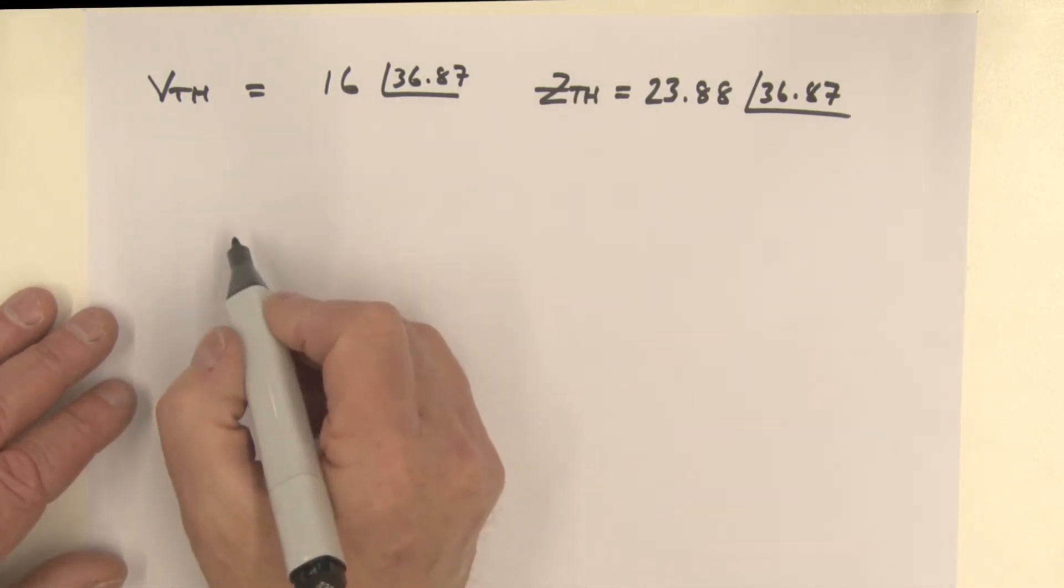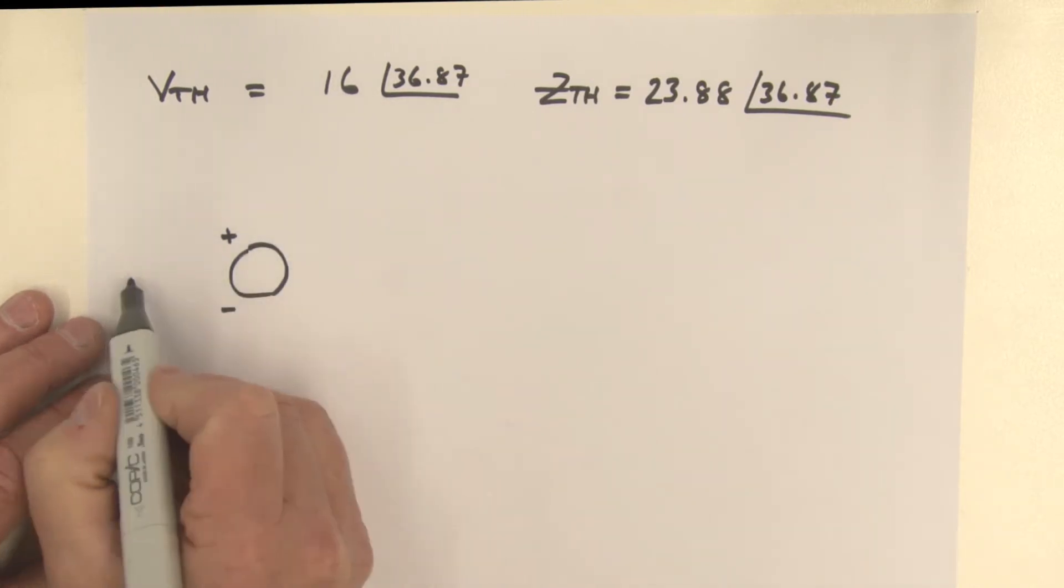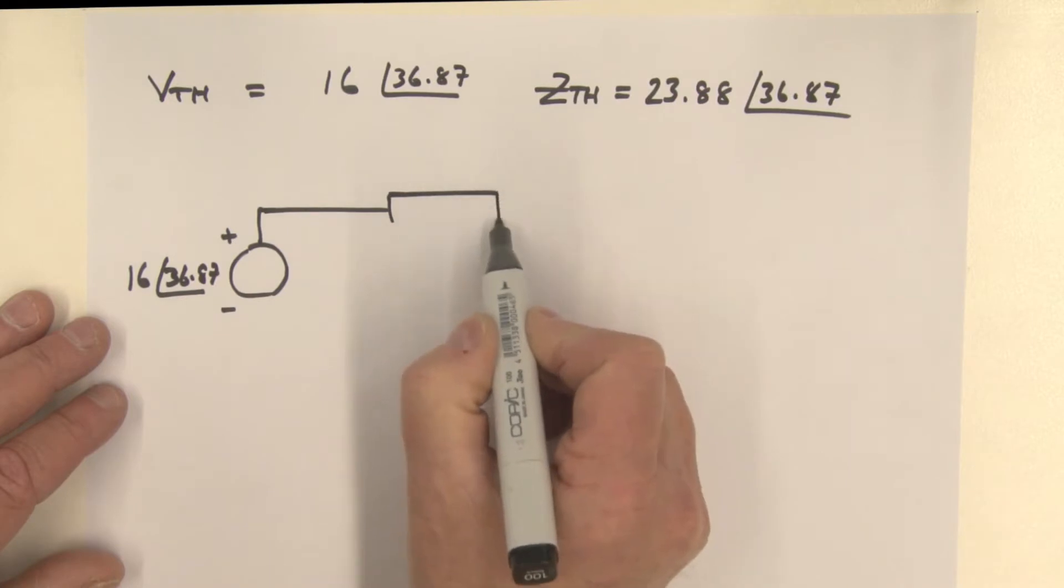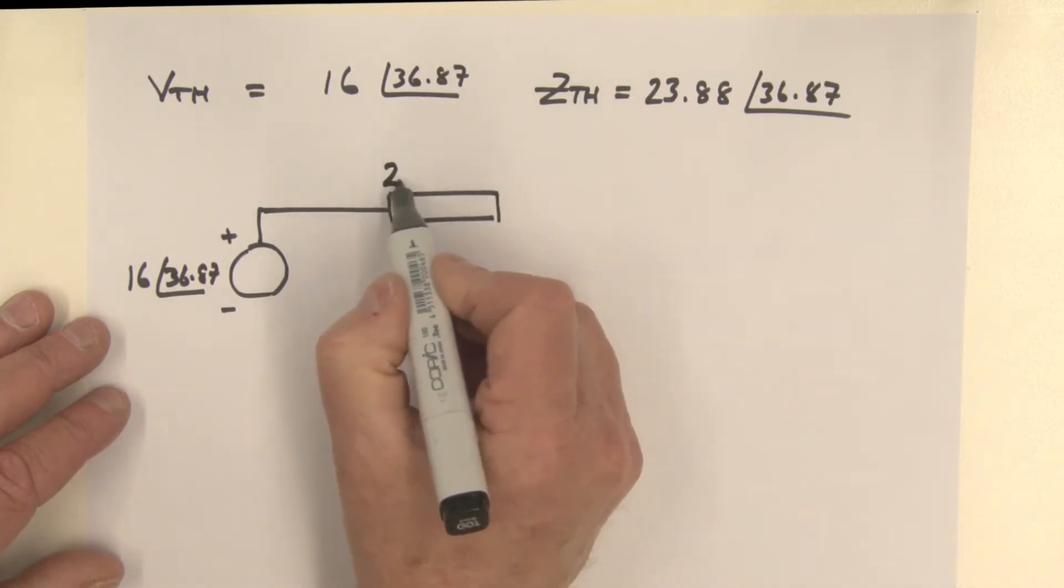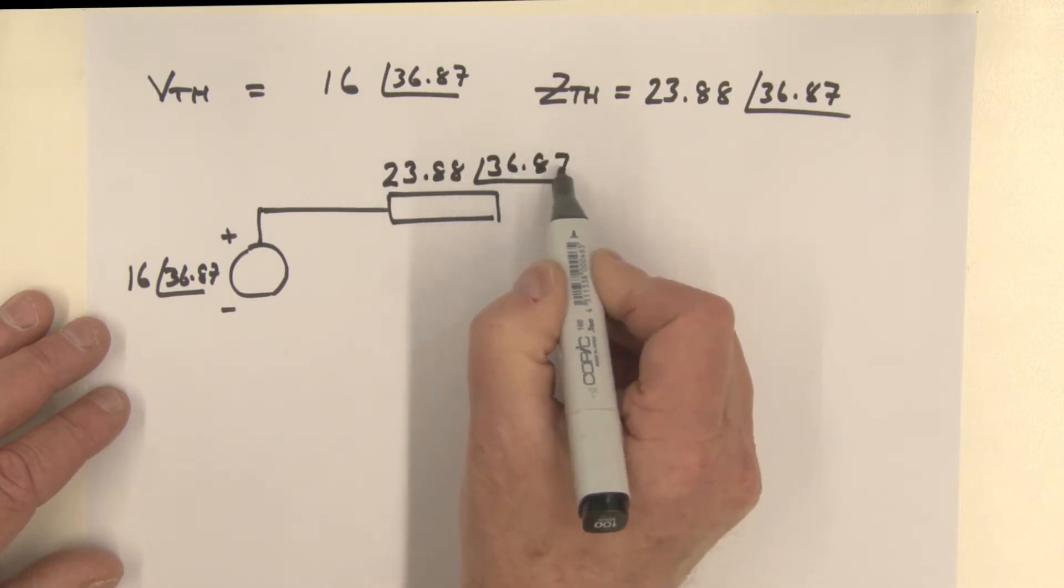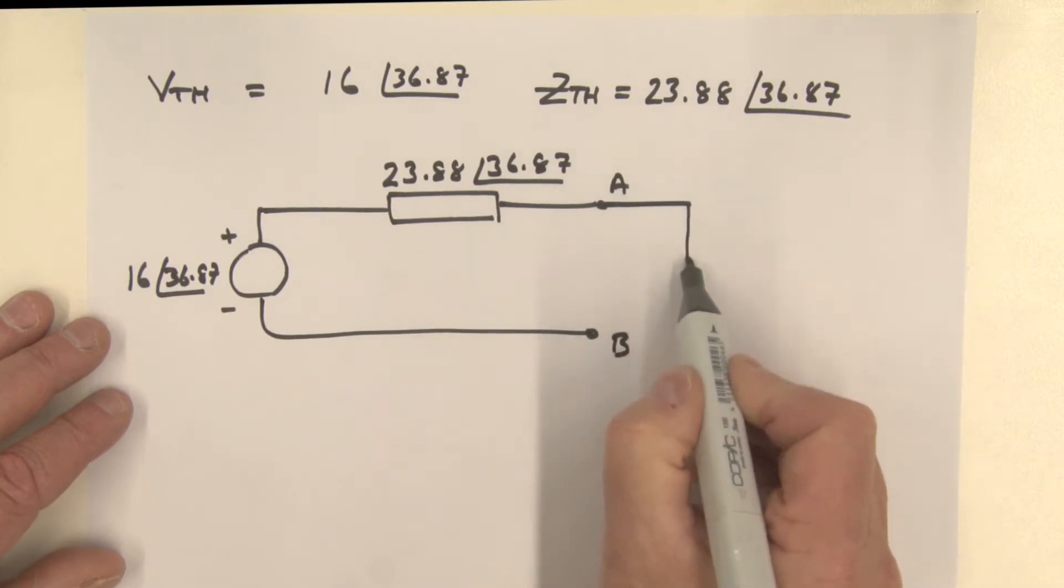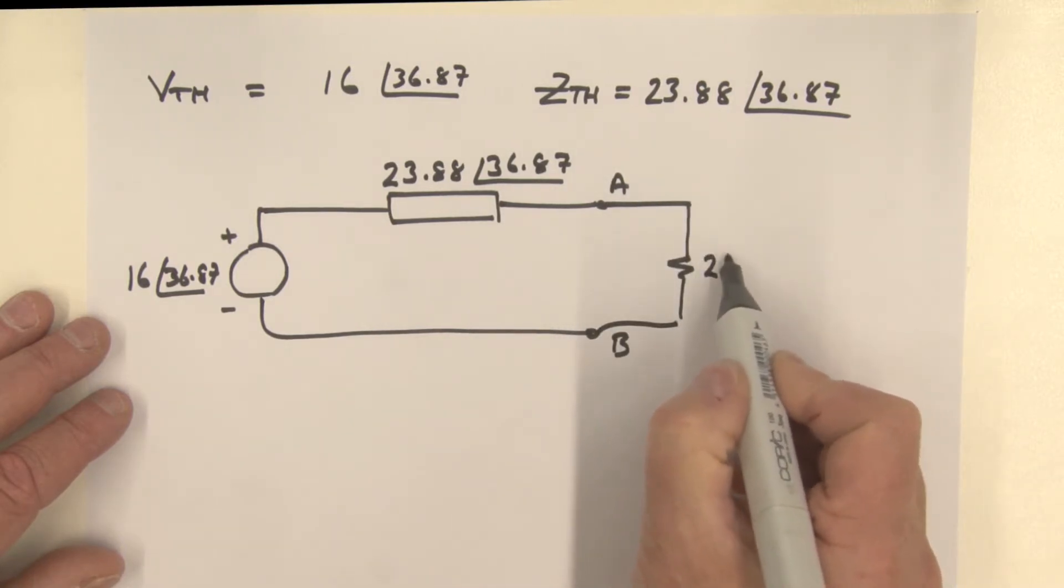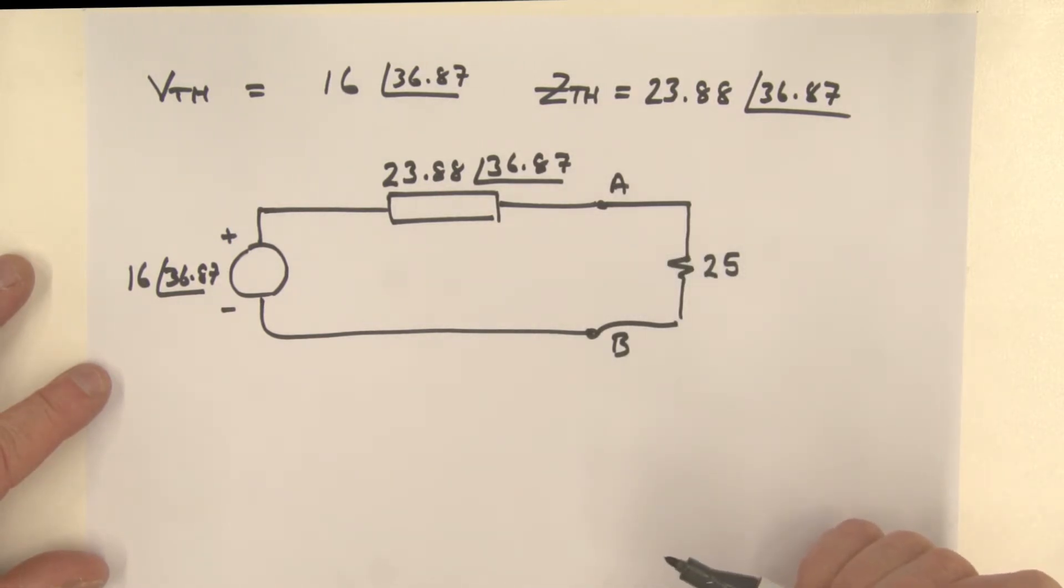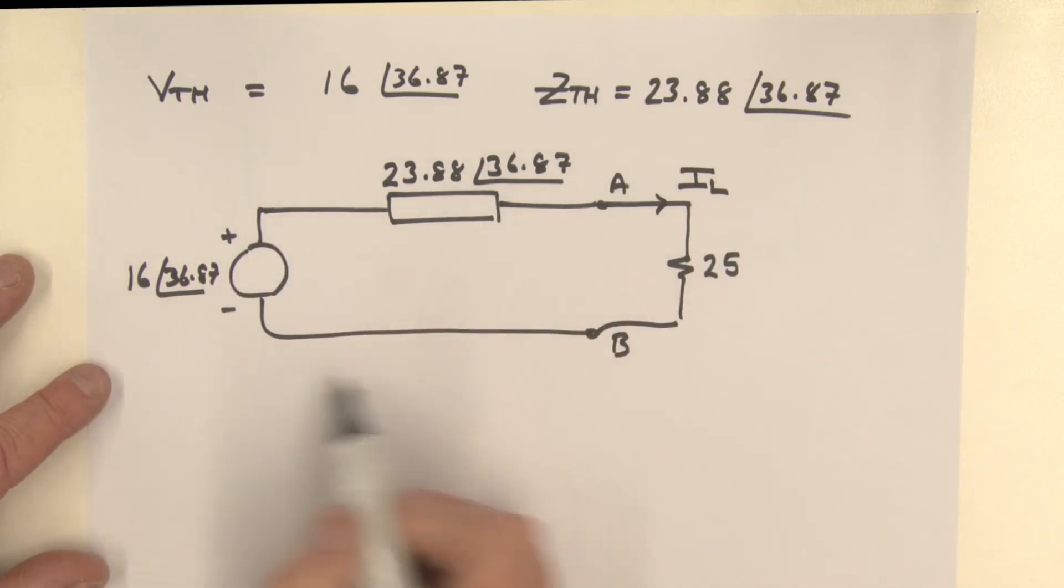Let's now draw that Thevenin equivalent circuit, and then we can put the load back. So our Thevenin voltage is 16 angle 36.87 in series with an impedance, the Z Thevenin, which is 23.88 at an angle of 36.87. There's our terminal A, and here is our terminal B. We can then reattach the load, which in this example was a 25 ohm resistor. What I'd like you to do is pause at this time and go ahead and calculate this load current using this Thevenin equivalent circuit.